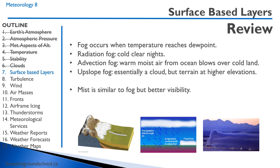Fog occurs when the temperature reaches the dew point. Radiation fog occurs on cold, clear nights where heat from the earth radiates out into space. Advection fog occurs in the maritimes where moist air from the ocean blows over cold land — it involves strong winds and can last days at a time. Upslope fog is essentially a cloud, but the terrain is at higher elevations. Mist is similar to fog but with better visibility — five-eighths of a mile or better.